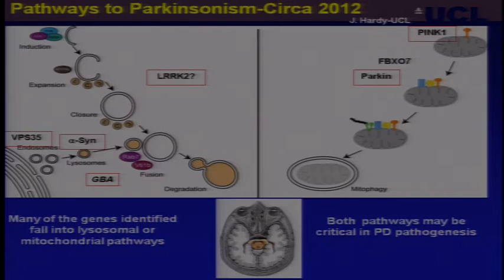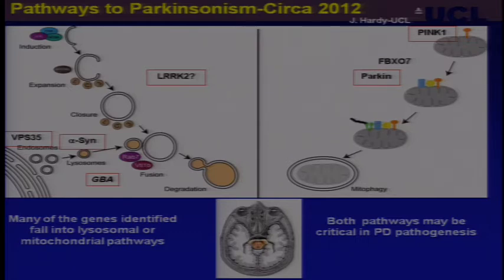Why is it important to discover these genes? This slide, borrowed from John Hardy, shows that many PARK genes fall into two pathways: the lysosomal pathway or the mitochondrial pathway. Both are probably critical in Parkinson disease pathogenesis. As we discover these genes, we're learning more and more about these pathways. The gene I'm going to focus on is GBA.